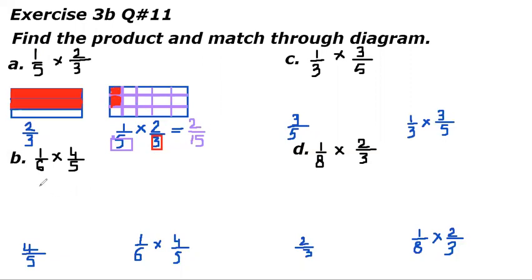Now part B is one-sixth of four-fifths. The first fraction is one-sixth, the second is four-fifths. First we will draw four-fifths, and then we will draw one-sixth of four-fifths, just like the first part. Let's start drawing.